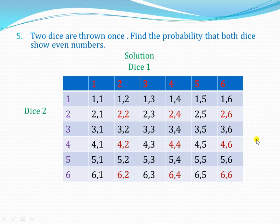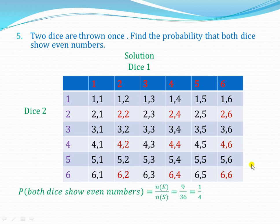Now we answer the question: both dice show even numbers. Looking through all pairs, we identify those where both numbers are even: (2,2), (2,4), (2,6), (4,2), (4,4), (4,6), (6,2), (6,4), and (6,6). Wherever one number is odd, we ignore that pair. Counting the qualifying pairs gives us 9. So our probability is 9 out of 36, which simplifies to 1 out of 4.